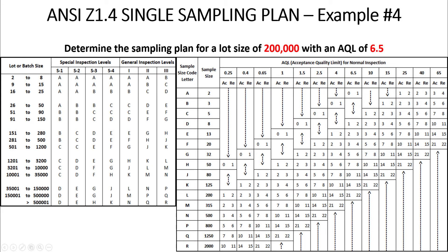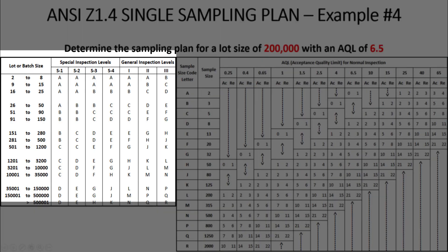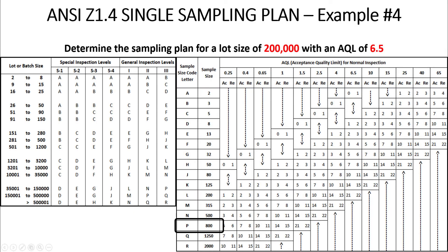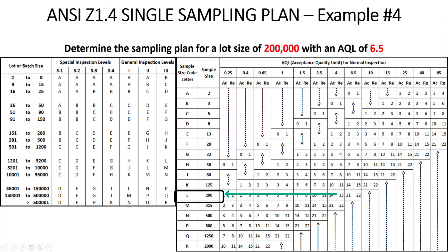One more example: a lot size of 200,000 pieces paired with an AQL of 6.5. That lot size gives sample size code letter P, which corresponds to 800 units. But at AQL 6.5 we find an up arrow, so we travel up to code letter L with a sample size of 200 and accept/reject criteria of 21 and 22. So from 200,000 pieces, we sample 200 — accepting with 21 or fewer defects, rejecting with 22 or more.